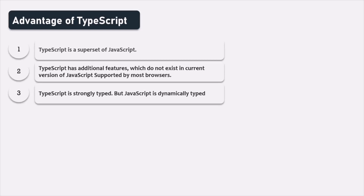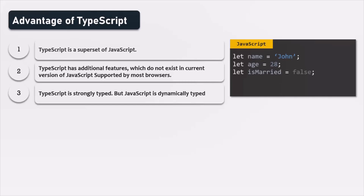TypeScript has additional features which do not exist in the current version of JavaScript supported by most browsers. For example, TypeScript is strongly typed, but JavaScript is not — it is dynamically typed. In JavaScript, when we create a variable and assign a value to it, we do not specify the data type explicitly. For instance, storing 'John' in a name variable makes its type string; assigning 28 to an age variable makes its type number; and assigning a Boolean value to an isMarried variable makes its type Boolean. The data type is calculated based on the value stored, which is why JavaScript is called dynamically typed.